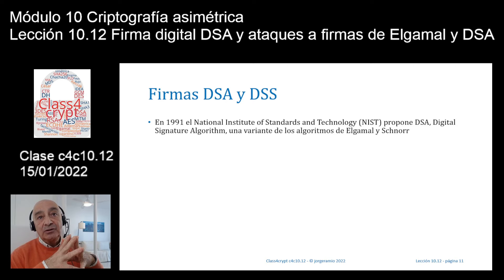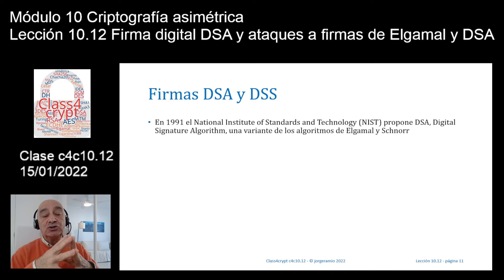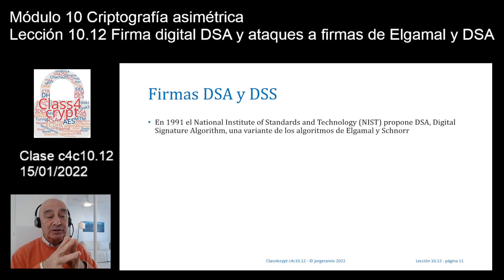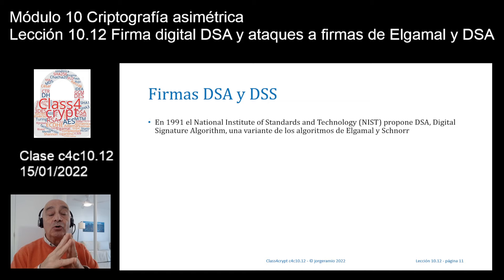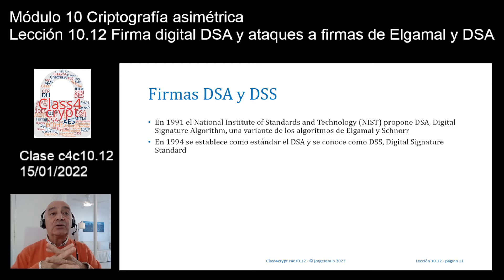En el año 1991 el National Institute of Standards and Technology, el NIST, propone DSA, siglas que corresponden a Digital Signature Algorithm. En el fondo, una variante, como veremos, de los algoritmos de ElGamal y de Schnorr. La firma de Schnorr no la veremos, pero en la bibliografía os entrego una URL para quien esté interesado. En el año 1994 se establece ya como estándar y DSA pasa a ser conocido como DSS, Digital Signature Standard.